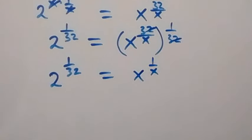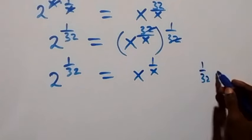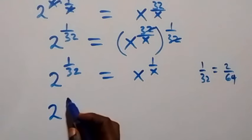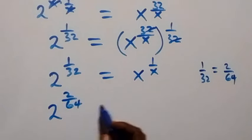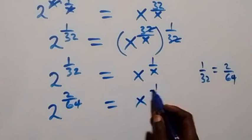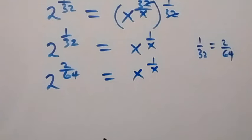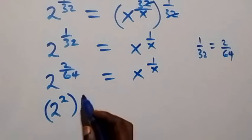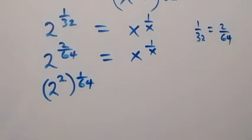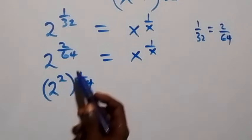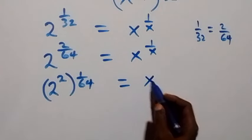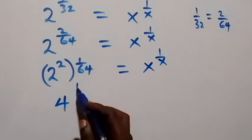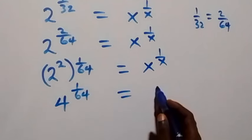From here we can rewrite 1 over 32 as 2 over 64. So 2 raised to power 2 over 64 equals x raised to power 1 over x. This is the same as 2 squared, raised to power 1 over 64. We separate these: 2 squared is 4, so we have 4 raised to power 1 over 64 equals x raised to power 1 over x.